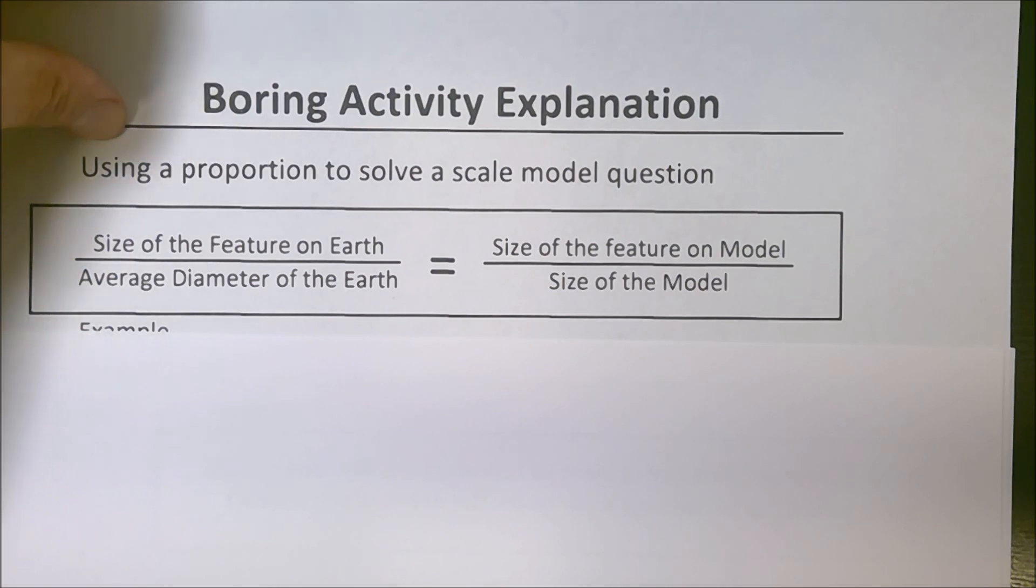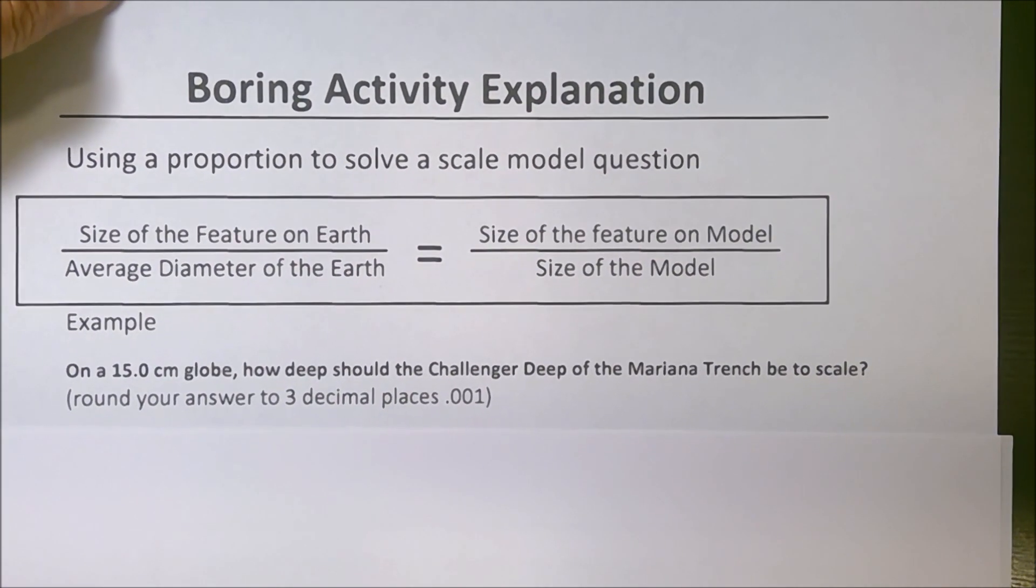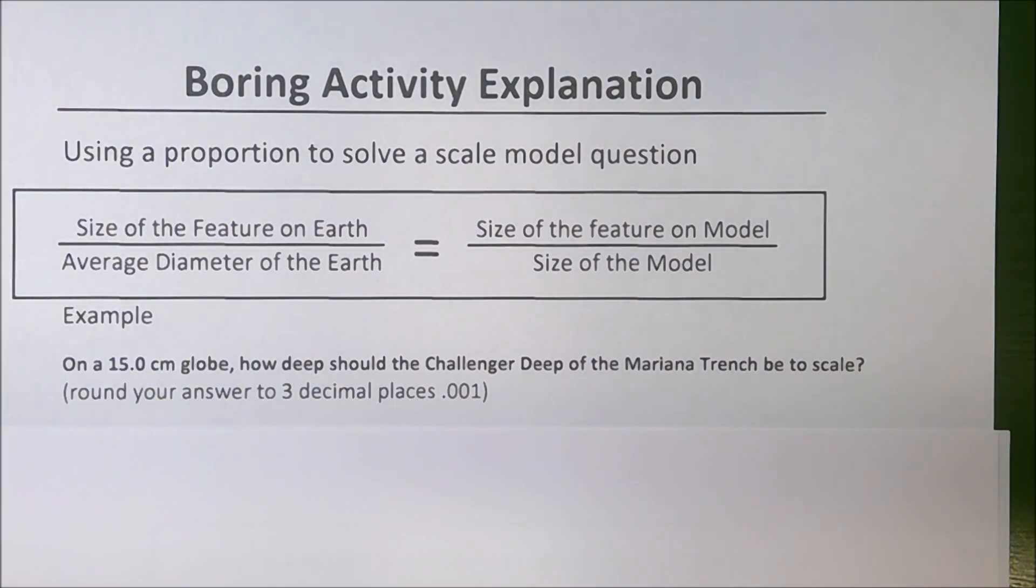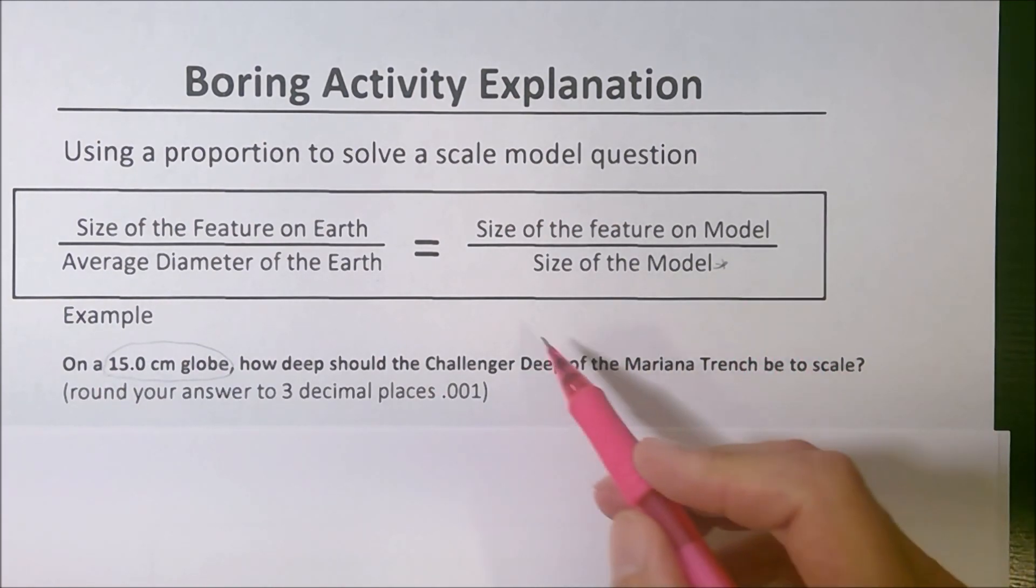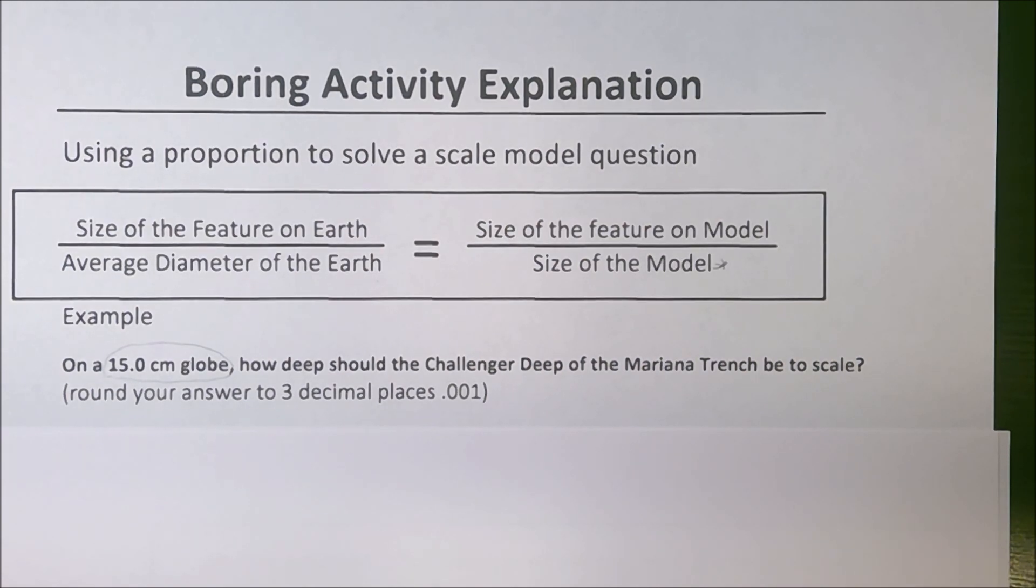So the best way to play with this is to actually give you an example. Let's say we're trying to make a 15-centimeter globe, and we wanted to represent the deepest part of the ocean, which is the Challenger Deep of the Mariana Trench. How deep of a groove should you have if you're scaling the Earth down to a 15-centimeter globe? I'm asking you to round this to three decimal places. We already know 15 centimeters is the size of our globe. There's four things. You have to know three in order to solve your proportion.